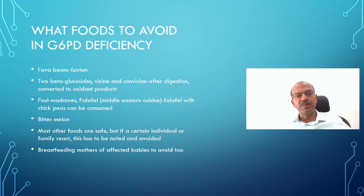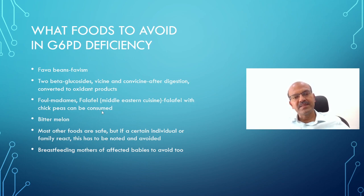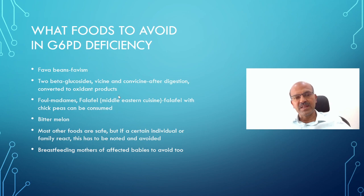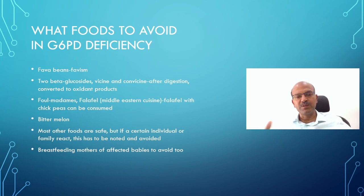In terms of foods to avoid, it is mainly fava beans — a long Mediterranean bean often used in foods like ful and falafel, which are common vegetarian options. Falafel from certain countries is made with chickpeas and can be consumed, but Egyptian-style recipes use fava, so that should be avoided. Pregnant mothers who are breastfeeding should also be advised to avoid fava beans if there is a family history, until the newborn screening report is available. Fava beans contain two beta-glucosides, vicine and convicine, which after digestion are converted to oxidant chemicals that can cause hemolysis. Bitter melon is another product that reacts similarly. For other foods, observe if there is a family history of a food triggering hemolysis and avoid it in that family.